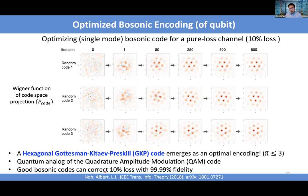Bosonic codes can correct up to 10% loss while restoring 99.99% fidelity with GKP encoding. This is quite impressive — with carefully designed optics, we may tolerate bosonic loss up to 10% while restoring very high fidelity. The caveat is that so far we assume encoding and decoding are perfect, which is something we still need to account for when choosing the optimum code.